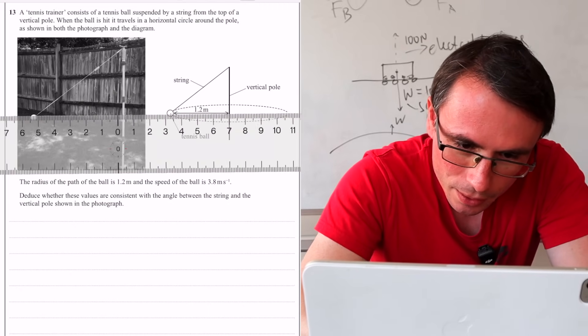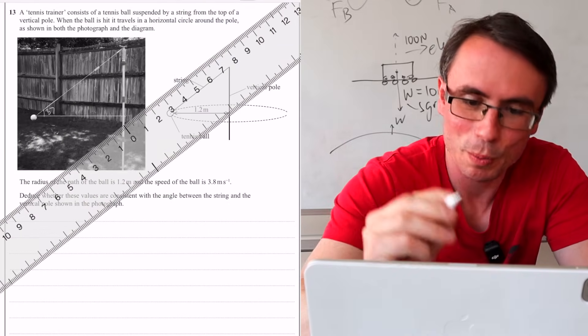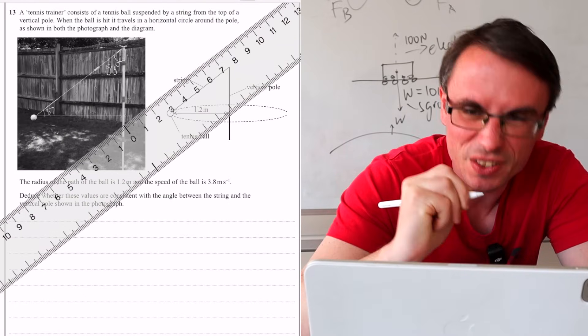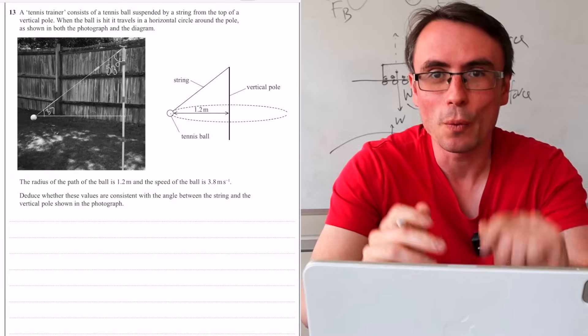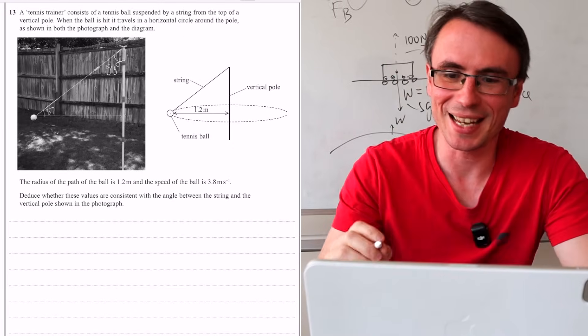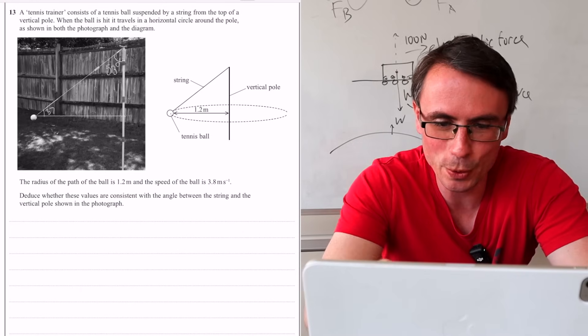And this angle here is 37, which means that this angle here has to be 53 degrees, give or take. So what we need to do is deduce whether those values are consistent. And these are one of my favorite types of problems, i.e. circular motion at an angle.